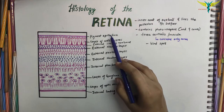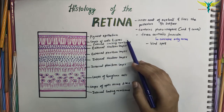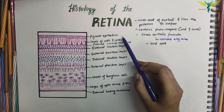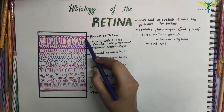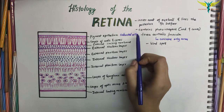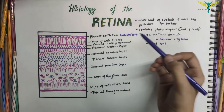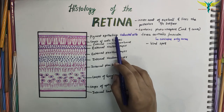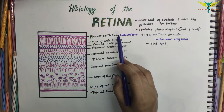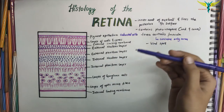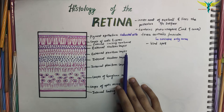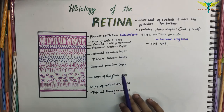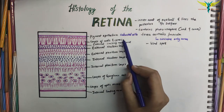The pigment cell layer is the outermost layer of the retina and it is separated from the choroid by Bruch's membrane. It consists of a single layer of cuboidal cells that contain melanin pigment. The function of this epithelium is to absorb and prevent the reflection of light that has passed through the neural layers of the retina, and the pigment cells also help in the phagocytosis of the outer segments of the rods and cones.